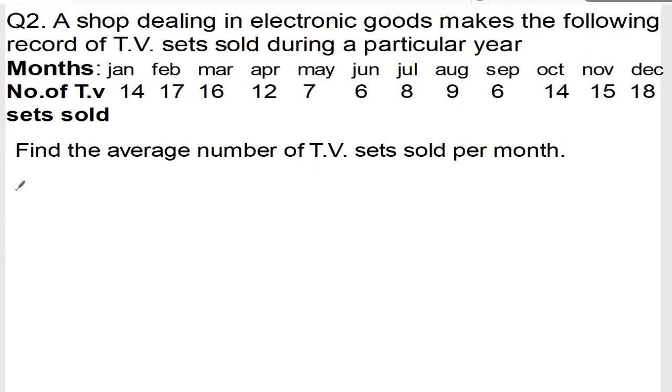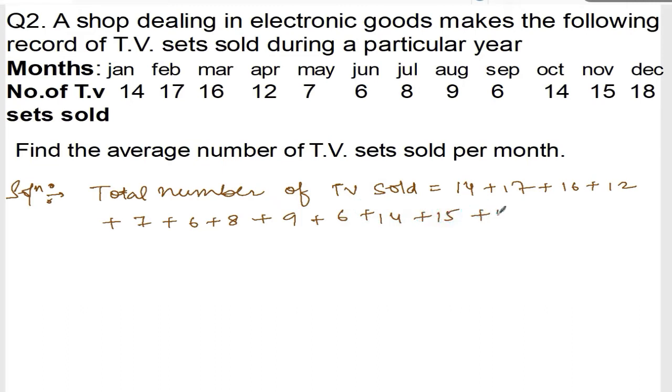So same thing. Solution. First, total number of TV sold is equal to add all this number: 14 plus 17 plus 16 plus 12 plus 7 plus 6 plus 8 plus 9 plus 6 plus 14 plus 15 plus 18. Right?